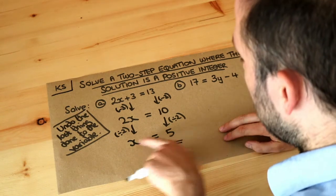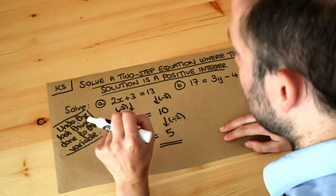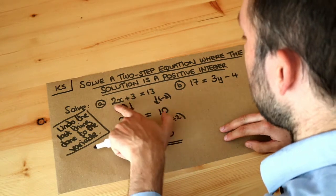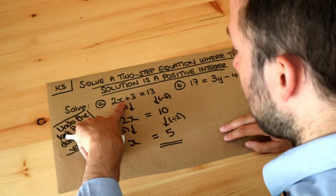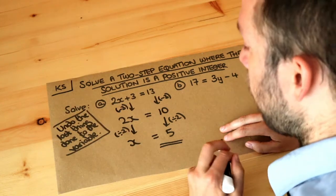We could check our answer because we can use that value of x as 5 and put it back, to substitute it into the original equation. 2 times 5 is 10. 10 plus 3 is 13. That works.